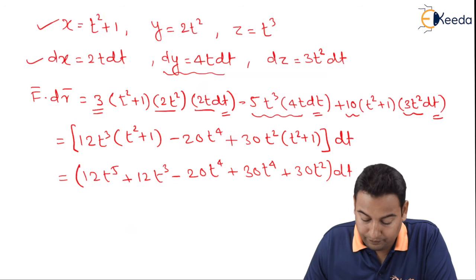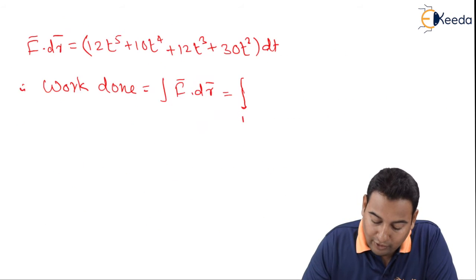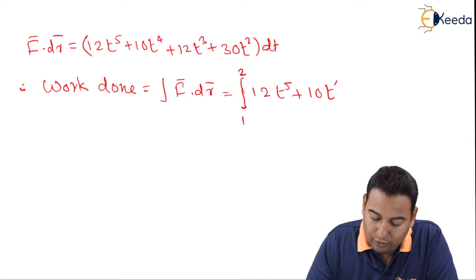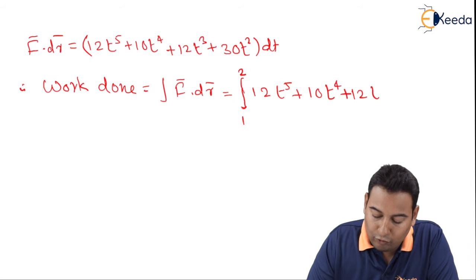Here friends, limit is already provided in the problem, which is t equal to 1 to 2. Let us substitute 1 to 2 inside. You have 12t raised to 5, 10t raised to 4, 12t cube, 30t square dt.